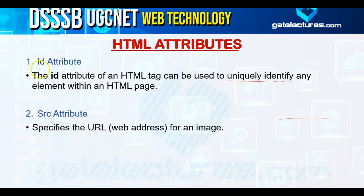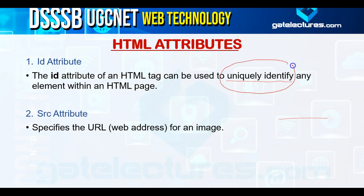Different attributes are available in HTML. The first one is the ID attribute — the ID attribute of an HTML tag can be used to uniquely identify any element within an HTML page. Next is the SRC attribute, which specifies the URL or web address for an image.